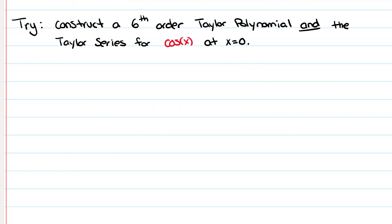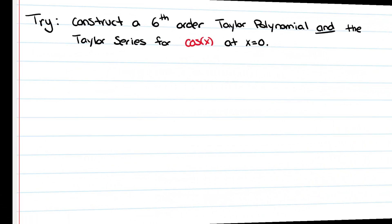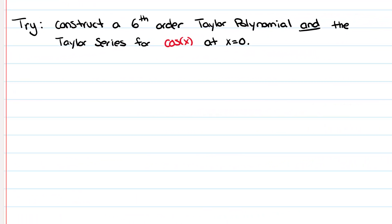Now, on your own, construct the sixth order Taylor polynomial and the Taylor series for cosine of x at x = 0 — basically the same process we just did for sine, but now for cosine. So the first thing I'm going to do is take six derivatives and plug in zero.